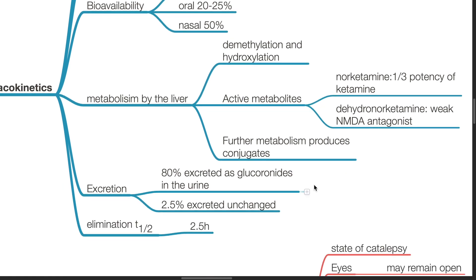Excretion: 80% is excreted as glucuronides in the urine, and 2.5% is excreted unchanged. Elimination half-life is 2.5 hours.